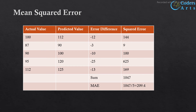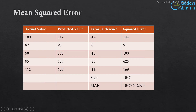We use the same data to calculate mean squared error. While calculating mean absolute error we took the absolute value, but here we take the square. So minus 12 becomes 144, minus 3 becomes 9, minus 10 becomes 100, and so on. We add all those squared values — the sum is 1047 — then calculate the mean. The mean squared error is 209.4.